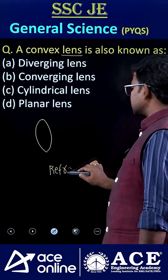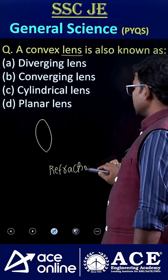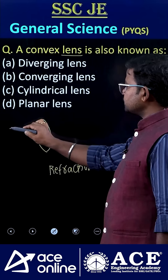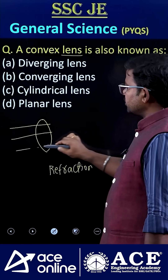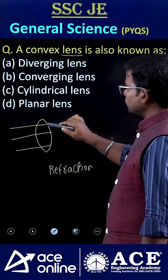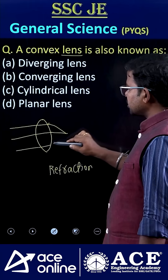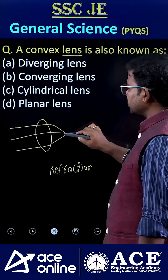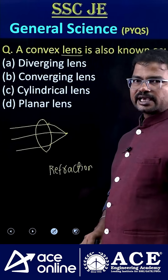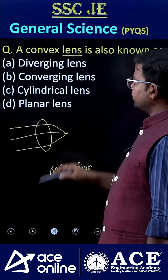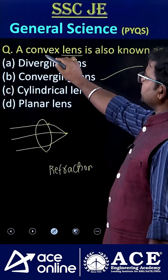Refraction is the phenomenon that occurs when light is passed through a convex lens. Almost all the rays merge at one particular point, which is why this is called converging.